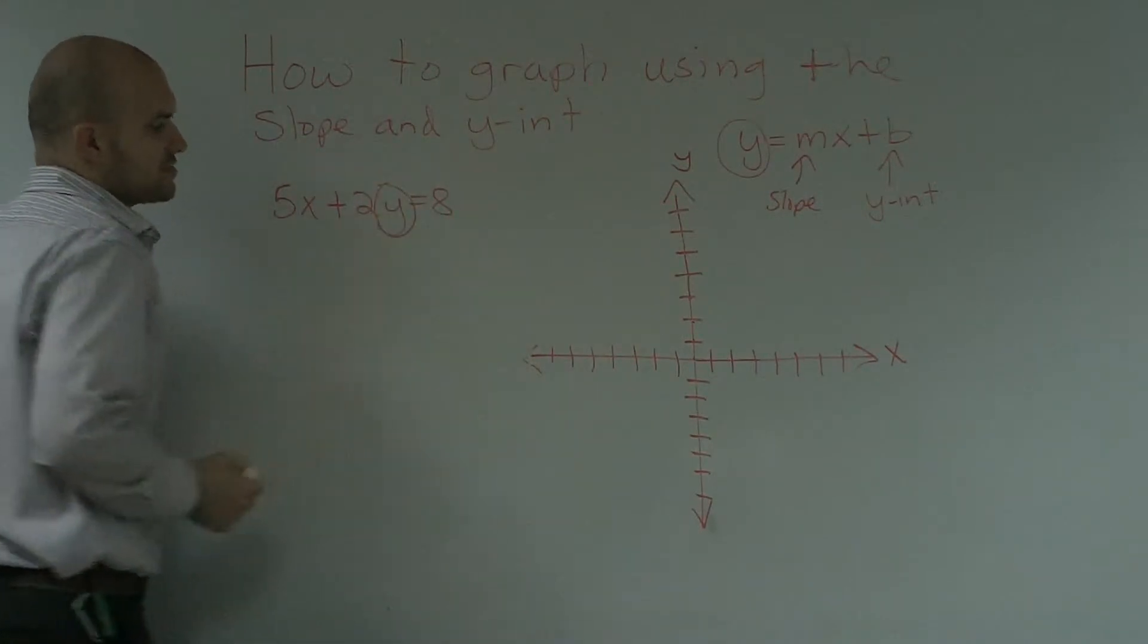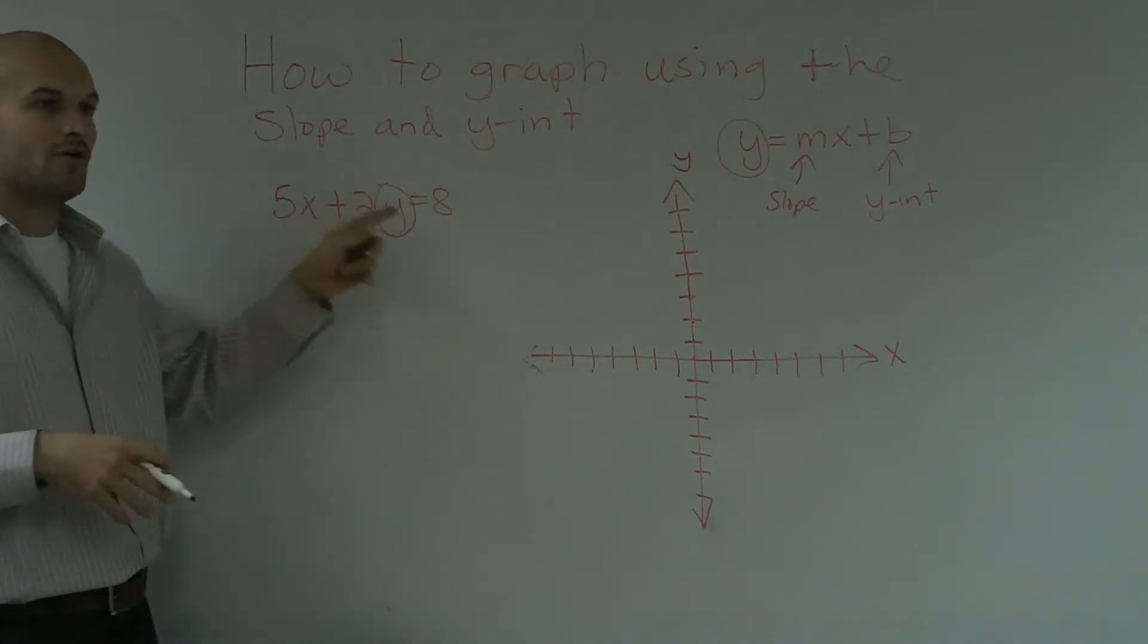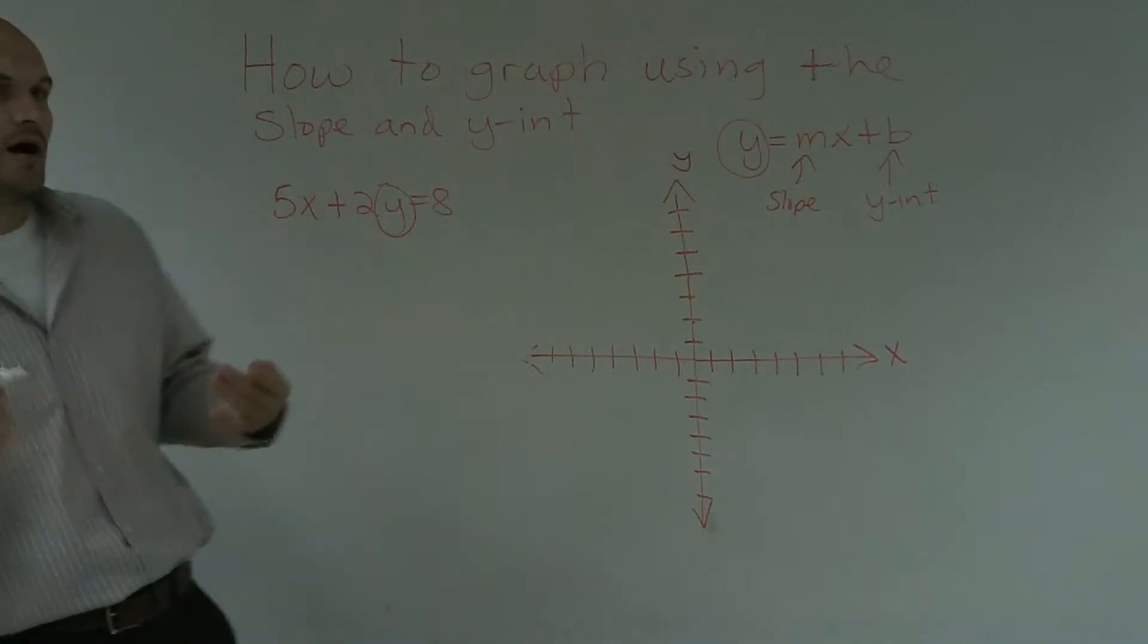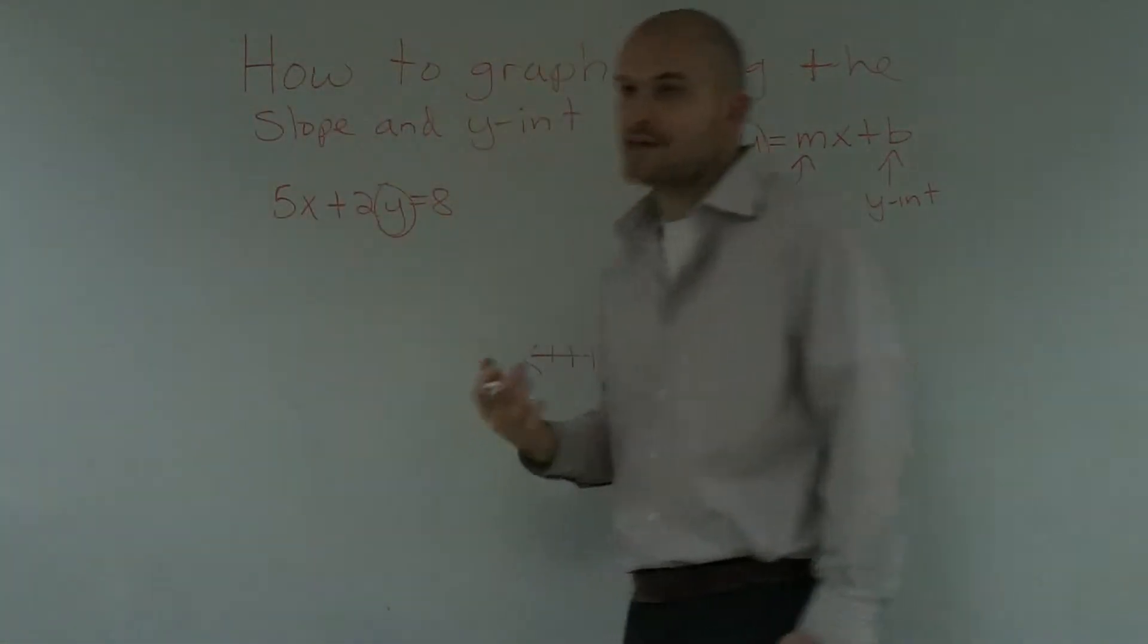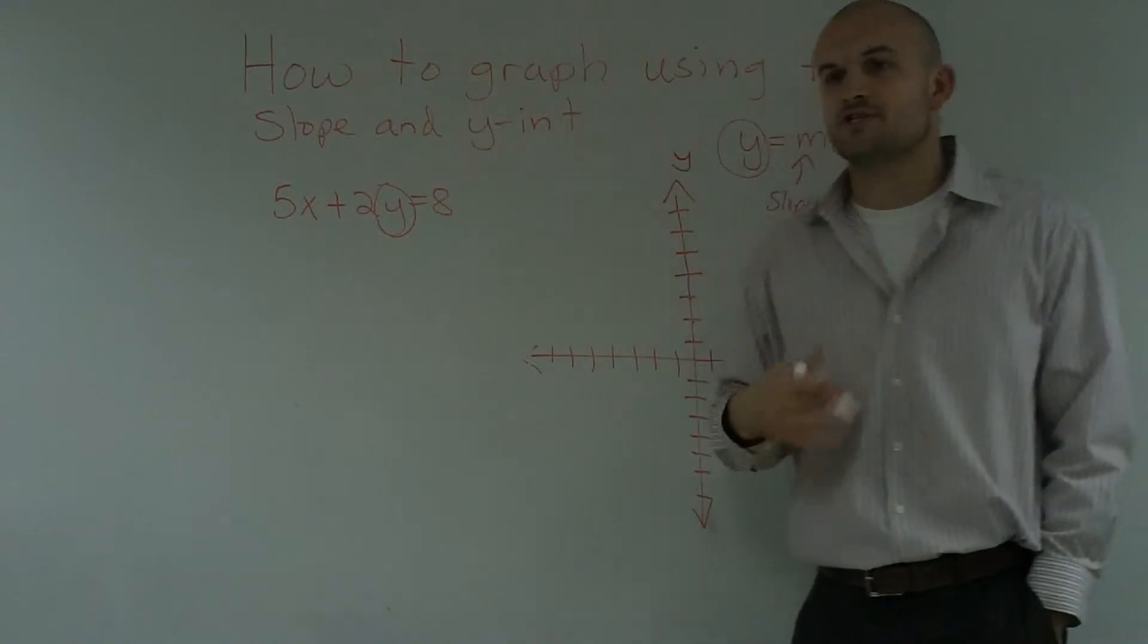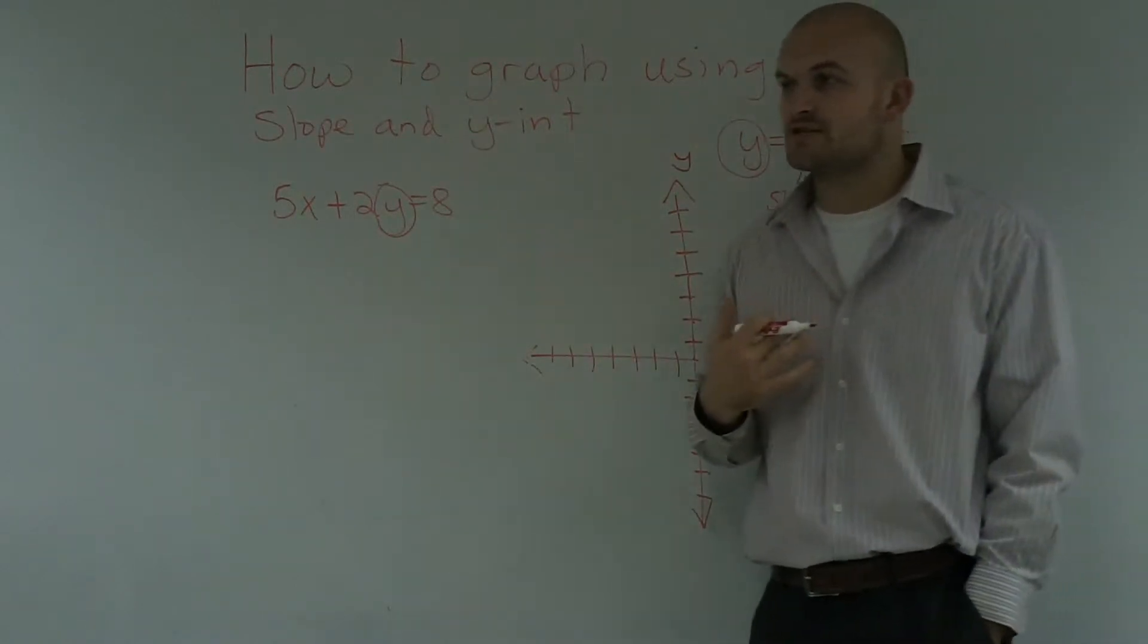I'm going to circle my variable, so it's going to remind me I have to solve for this variable. That means I'm going to have to undo all the operations that's happening to it. And if you remember, when we undo our operations, we always want to undo addition and subtraction first.